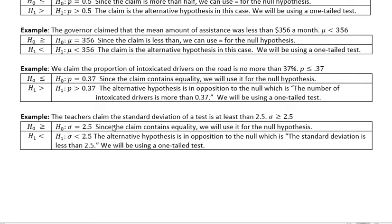And the last one, the teacher claimed the standard deviation of a test is at least 2.5. If it's at least something, it could be 2.5 or it could be more. And it's talking about standard deviation. So we're using that lowercase sigma. So you always have to see what the claim is talking about. So because this again has an equal to part in it, that has to become our null hypothesis. So the null hypothesis is greater than or equal to, which means the alternative is in opposition to that, which is less than.